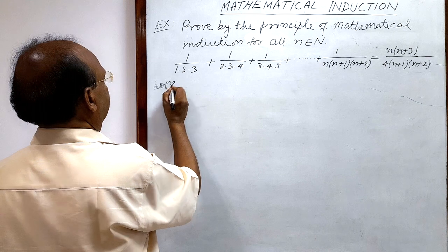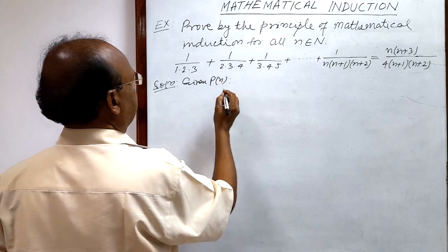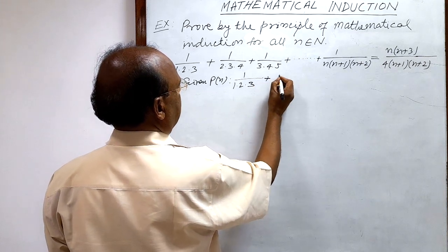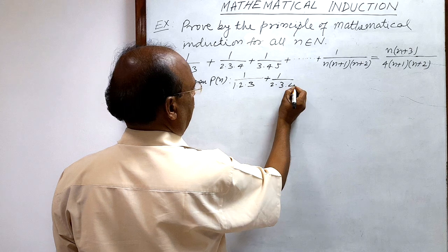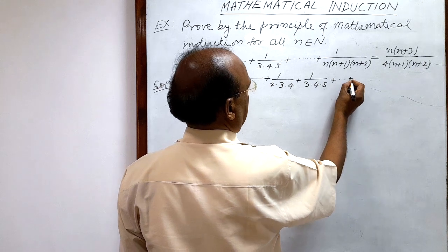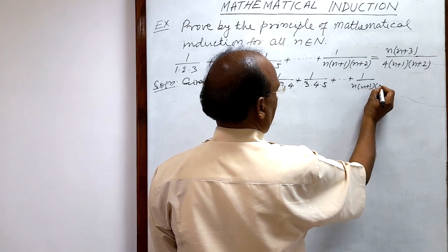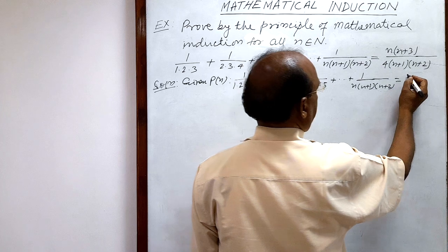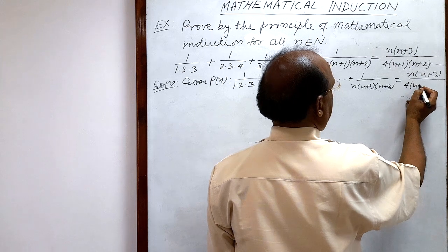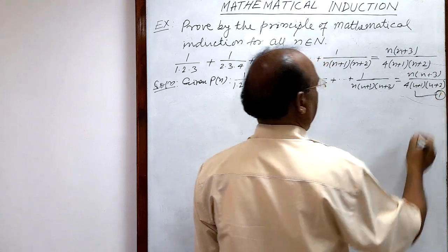The given mathematical statement P(n) is: 1/(1·2·3) + 1/(2·3·4) + 1/(3·4·5) + ... + 1/(n·(n+1)·(n+2)) = n(n+3) / [4·(n+1)·(n+2)]. Let us call this relation number 1.